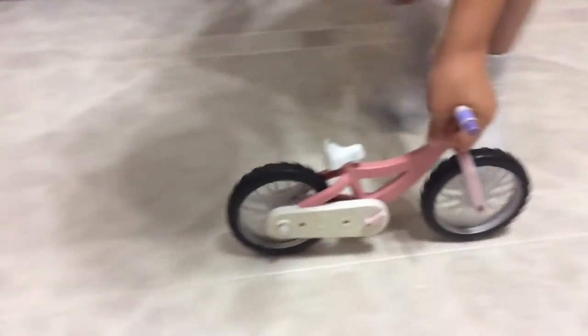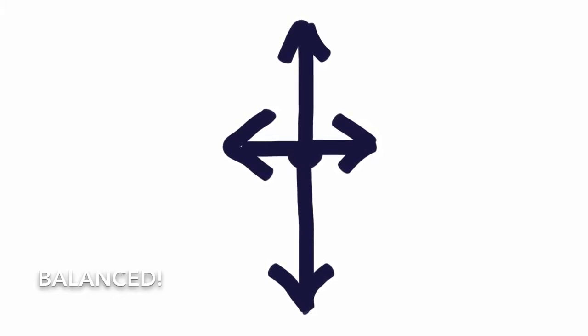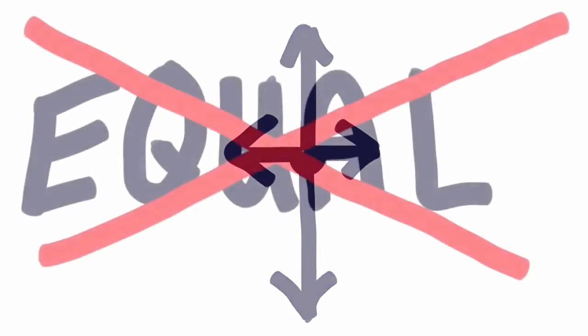Now consider a motorcycle rolling down the highway at a constant 72 miles an hour. This is a constant velocity. Forward and backward forces, balanced. Up and down forces, balanced.